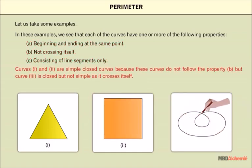Curves 1 and 2 are simple closed curves, because these curves do not follow the property B, but curve 3 is closed, but not simple, as it crosses itself.